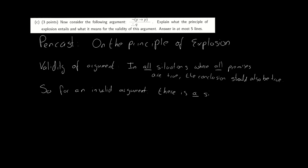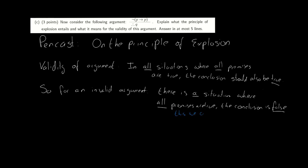For an argument to be invalid we need to look at the negation of this — in other words, there needs to be a situation in which all of the premises are true but the conclusion is false. We call such a situation a counter-example.